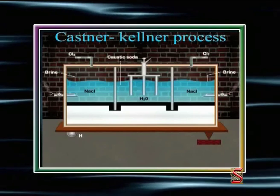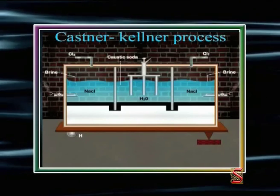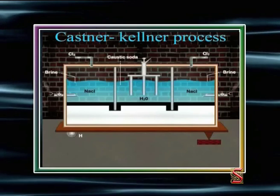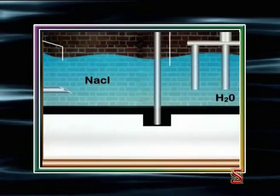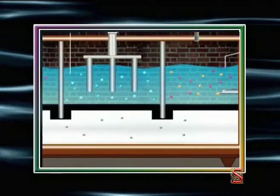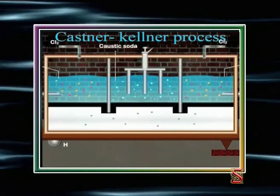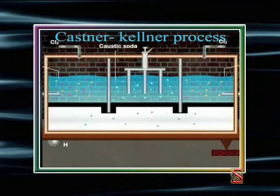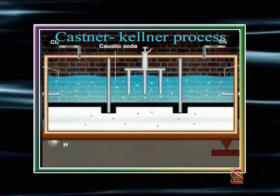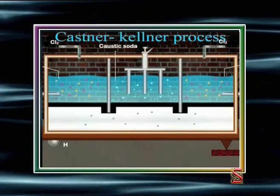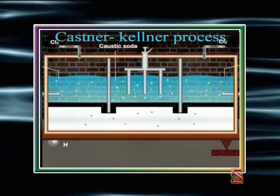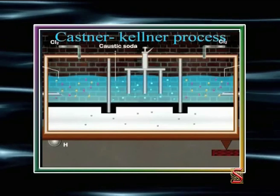The mercury is set in motion with the help of an eccentric wheel at the bottom of the tank. The middle compartment is filled with a dilute solution of sodium hydroxide, while the outer compartments are filled with brine solution. Two graphite rods in the outer compartments act as anodes, and a series of iron rods in the middle compartment act as cathodes. Mercury in the outer compartments acts as cathode, while in the middle compartment it acts as anode by induction.